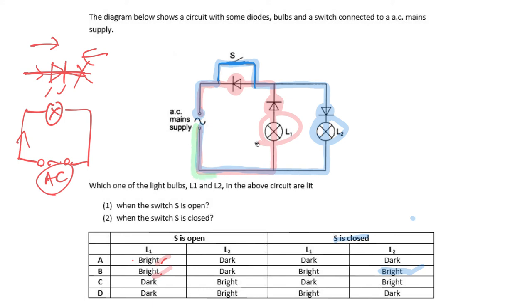When the alternating current flows in the anti-clockwise direction with S closed, the current flows through bulb L1 and through the forward-biased diode with low resistance, choosing the low resistance path and forming a closed circuit — so L1 will light up and be bright. When the current tries to flow through the other branch, that diode is reverse biased, so nothing flows through it. Therefore, the answer is B.